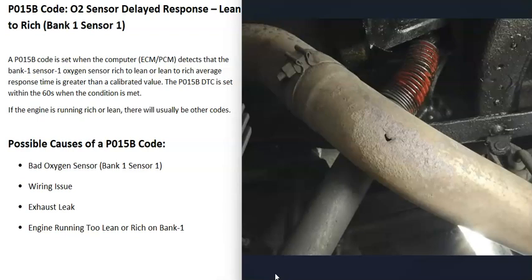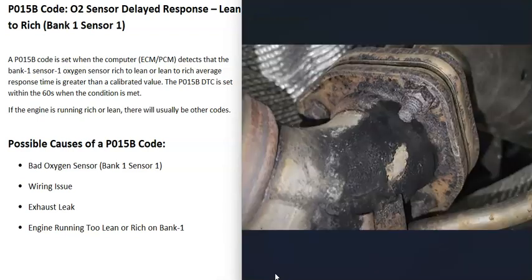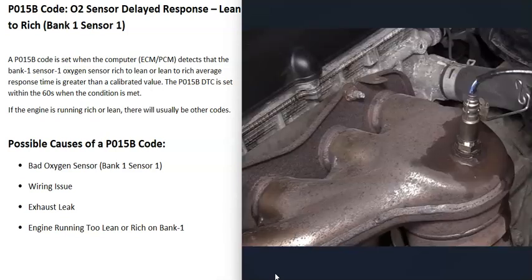An exhaust leak usually causes the sensors to read a lean condition, so keep a lookout for any exhaust leaks. The last cause on the list is some kind of engine problem causing bank one to run too lean or too rich, meaning the air-fuel ratio mixture is off.